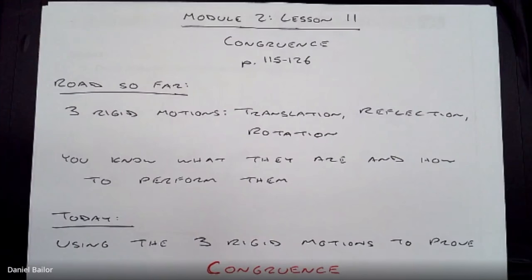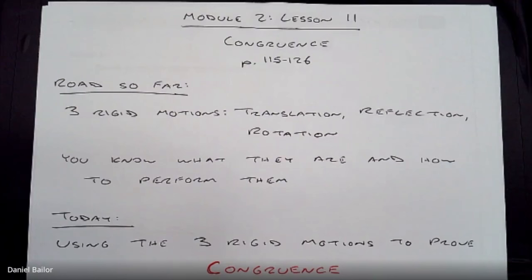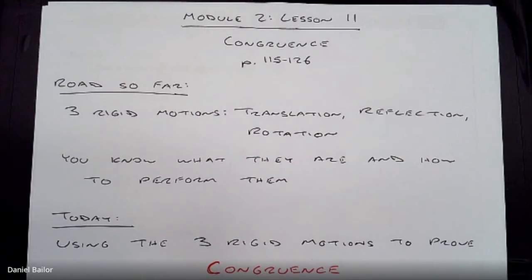So far in Module 2, we've learned about the three rigid motions: translations, reflections, and rotations. We've spent 10 lessons studying those, and you've taken a couple of quizzes and one mid-module test. You should know what those three rigid motions are, be able to describe them, and perform them using your transparency. If you are confused about any of those things, you need to schedule a meeting with me for some one-on-one coaching, because it is important you know how to do all three for the rest of Module 2.